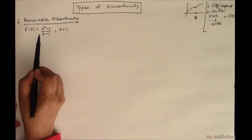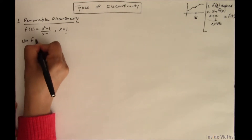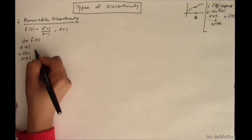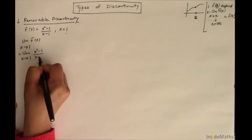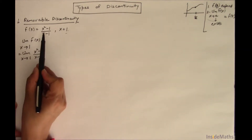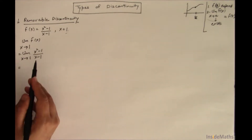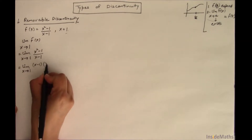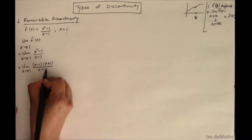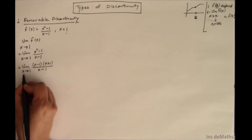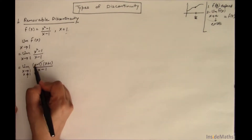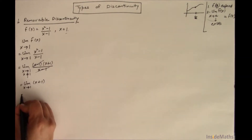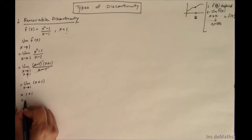Now let's check the continuity of this function. First, I'll find the limit of f(x) as x approaches 1: the limit of (x² - 1) / (x - 1) as x → 1. Direct substitution fails, so I'll factor the numerator to get (x - 1)(x + 1) / (x - 1). Since x is approaching 1 but not equal to 1, I can cancel these terms, giving the limit of (x + 1) as x → 1, which equals 1 + 1 = 2.